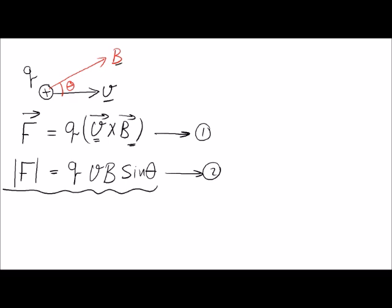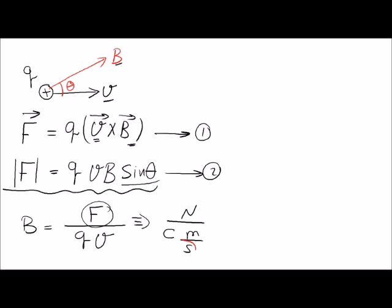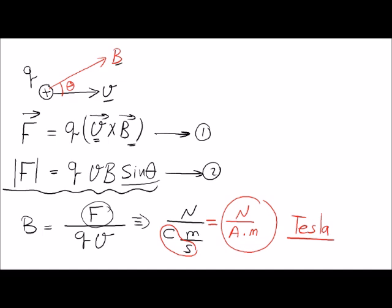From this equation we can get the unit of the magnetic field. The magnetic field equals force divided by QV, and sine theta is dimensionless. The unit of force is Newton, divided by Coulomb times meters per second. Coulomb per second is ampere, so we get Newton per ampere per meter. We call this unit Tesla — the unit of the magnetic field is called Tesla.